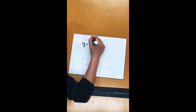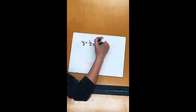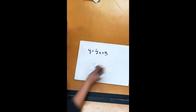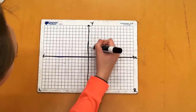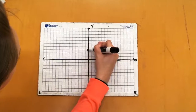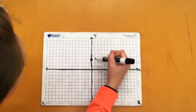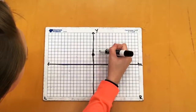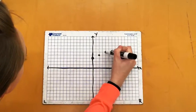y equals one-half x plus three. Your y-intercept is positive three, so you'll plot a point at positive three. Next, you will rise up one and over two and continue to do that.